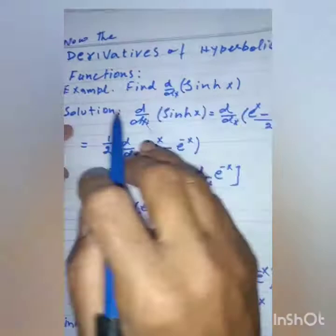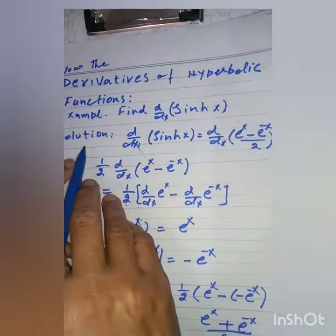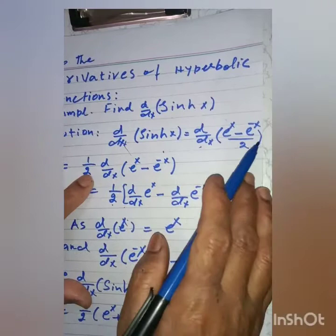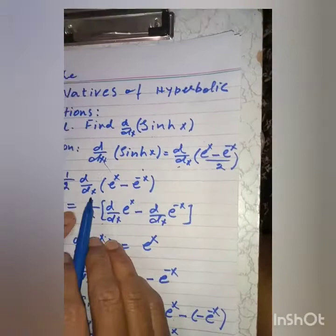Now we take the derivative of hyperbolic functions. Example: find d by dx of sinh x. Solution: d by dx of sinh x will be equal to d by dx of e to the power x minus e to the power minus x dividing by 2. Now 1 by 2 is taken common from this value, so we get d by dx of e to the power x minus e to the power minus x, which equals 1 by 2 into d by dx of e to the power x minus d by dx of e to the power minus x.